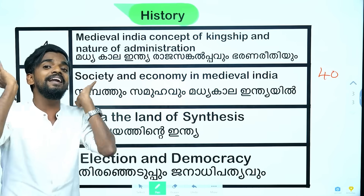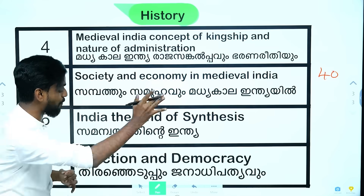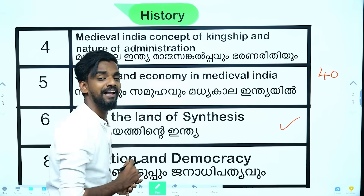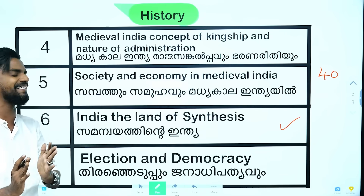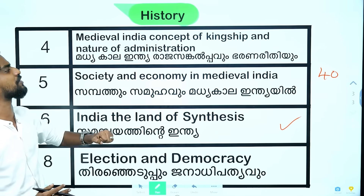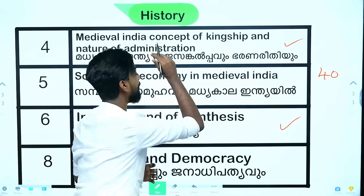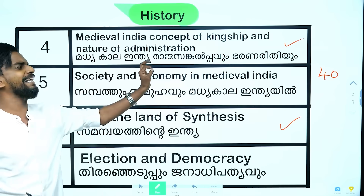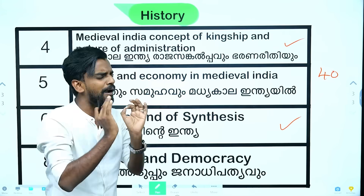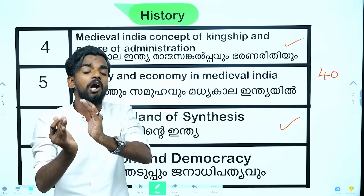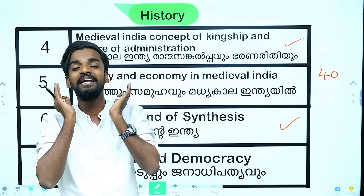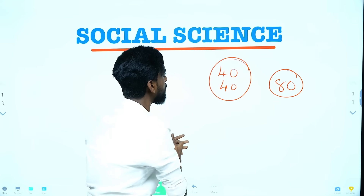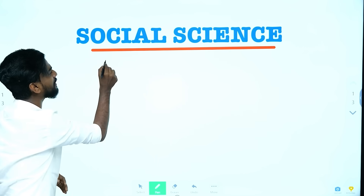You have the examination of the domestic half-year, and there are some examples of the examination which should include election and democracy. This chapter is the first chapter of the study of the Indian community, and the 4th chapter of medieval Indian concept of kingship and nature of administration. We are at the beginning of this chapter today. You do all the following chapters: four chapters about geography and four chapters about history.